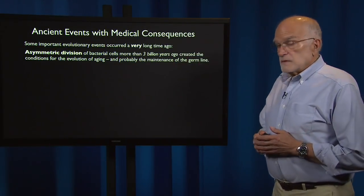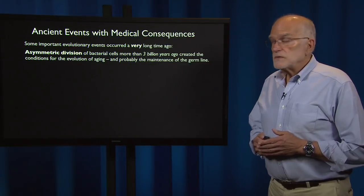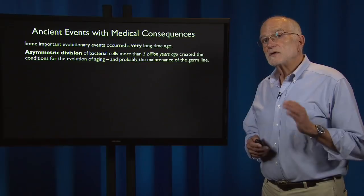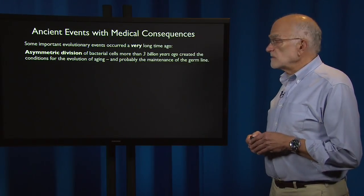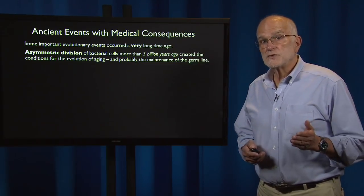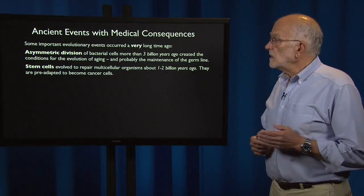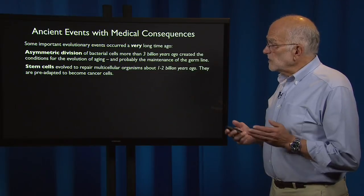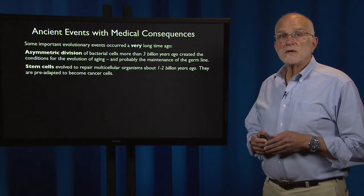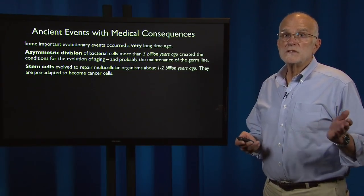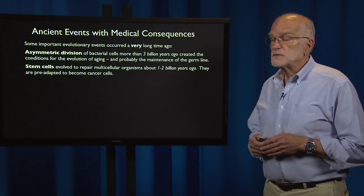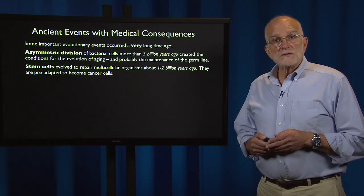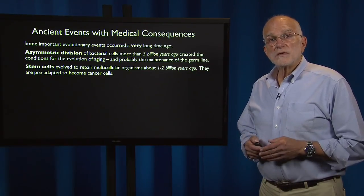Asymmetric division is something that happened in bacterial cells more than three billion years ago, and that created the condition for the evolution of aging, and probably also for the maintenance of the germline. Stem cells are a great idea — they evolved to repair multicellular organisms when multicellularity originated sometime between one and two billion years ago. However, they are pre-adapted to become cancer cells; they contain some of our vulnerability to cancer.